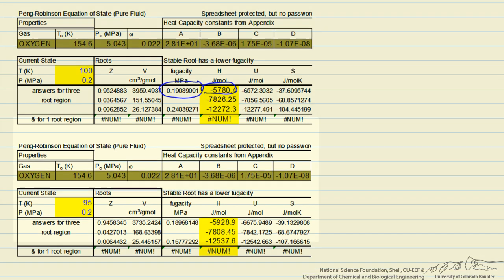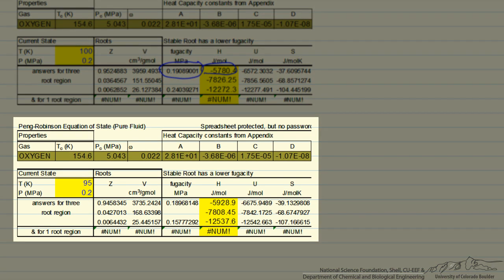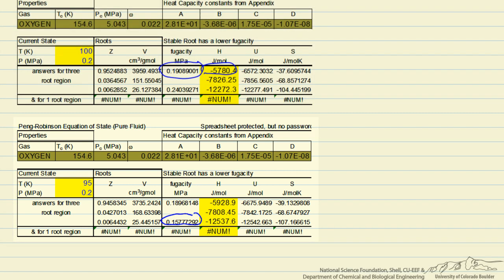So here's the Peng-Robinson equation of state for a lower temperature, 95 Kelvin, and again, three solutions. The lower fugacity is the liquid phase in this case, and this number is much lower than our enthalpy H2. That means we must be in the two-phase region at a temperature in between these two, because we go from vapor at 100 to liquid at 95. And so we can certainly use solver, or it doesn't take very much trial and error.